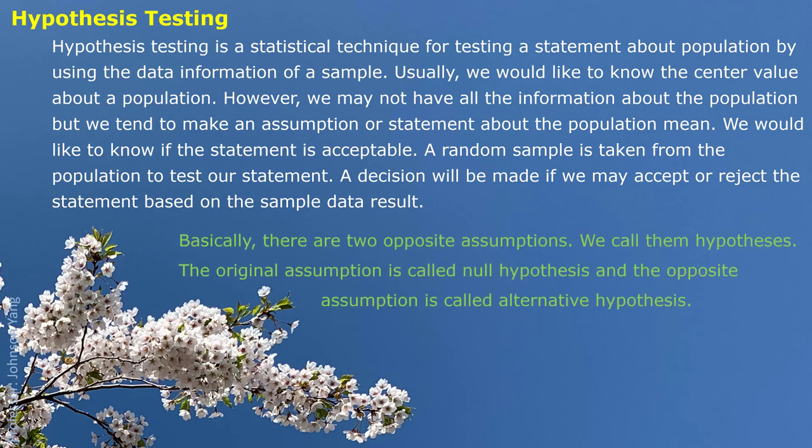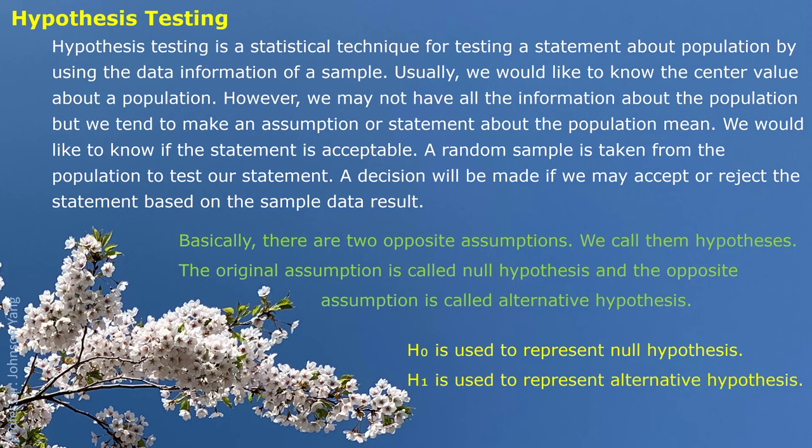Basically, there are two opposite assumptions — we call them hypotheses. The original assumption is called the null hypothesis, and the opposite assumption is called the alternative hypothesis. We use H0 to represent the null hypothesis and H1 to represent the alternative hypothesis.